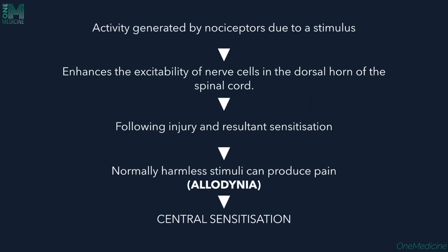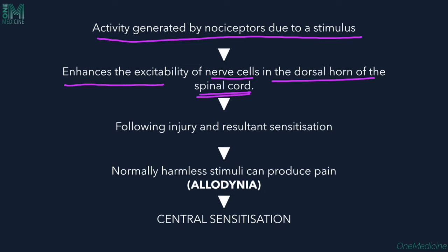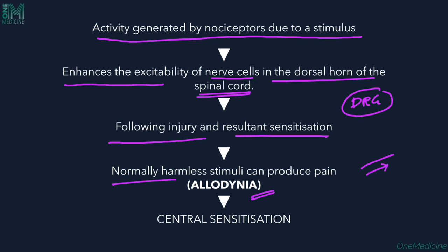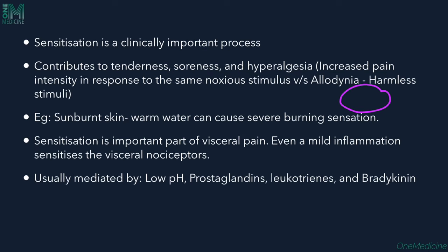For central sensitization, activity generated by nociceptors enhances the excitability of nerve cells in the dorsal horn of the spinal cord. Following injury, this sensitization means normally harmless stimuli produce severe pain — called allodynia — where even a slight touch causes a lot of pain. Sensitization is a clinically important process contributing to tenderness, soreness, and hyperalgesia.